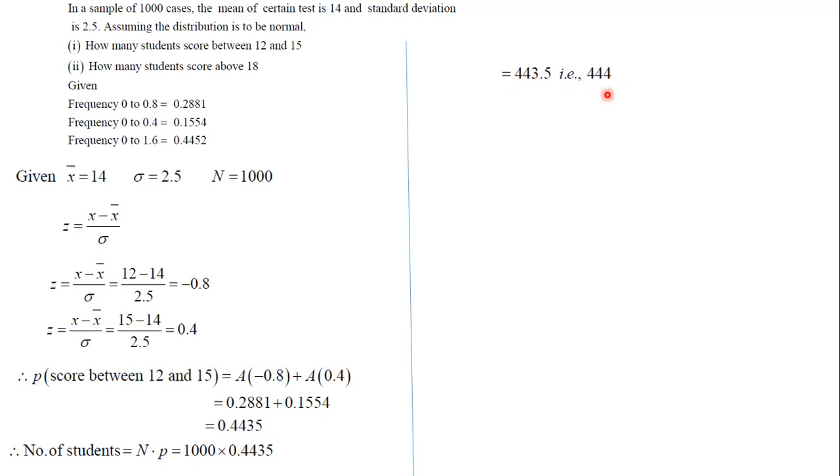Similarly, for above 18, substituting 18, we get z = 1.6. The frequency which is given to us is 0.4452, but this is given in our question, so we'll directly use this.